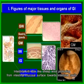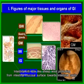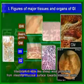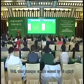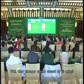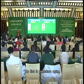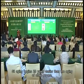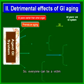Intestinal villi look like sheep wool protruding from the intestinal mucosa surface towards intestinal cavities. What damages can be caused by GI aging? The first is premature aging: GI aging begins 20 years earlier than the aging of other organs, so everyone can be a victim.